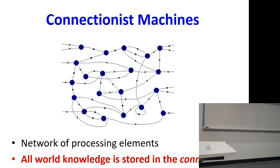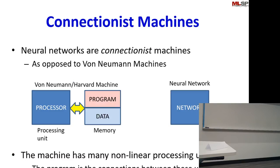So what is a connectionist machine? It's a network of processing elements, and all world knowledge stored in the machine is stored in the connections. In this computer — or each of your standard computers, or your smartphones — what kind of architecture do they have? How would you define that architecture?